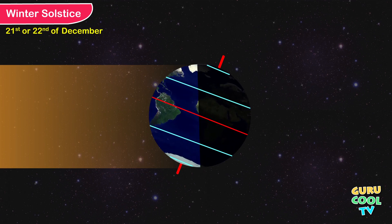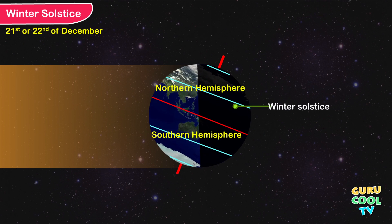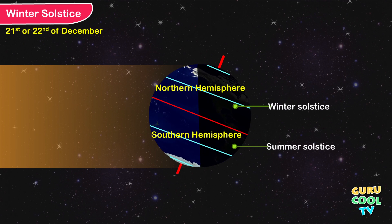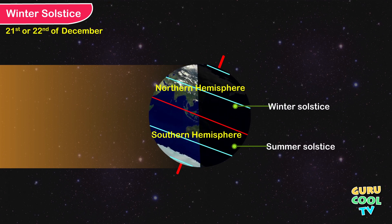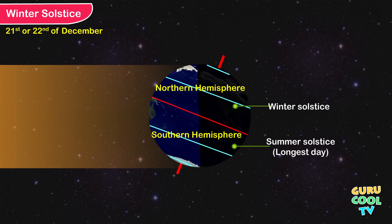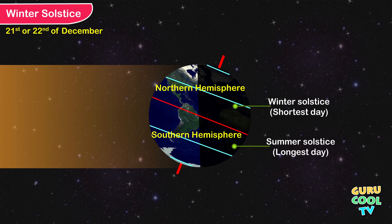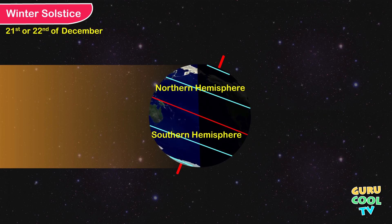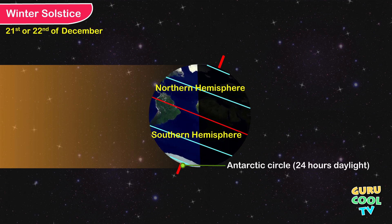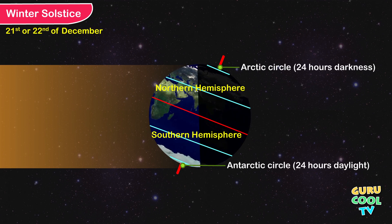On this day, the northern hemisphere is in winter solstice and the southern hemisphere is in summer solstice. The southern hemisphere experiences summer with the day being the longest day of the year, while the northern hemisphere has winter with the day being the shortest day of the year. The Antarctic Circle has 24 hours of daylight on this day, while the Arctic Circle experiences 24 hours of darkness.